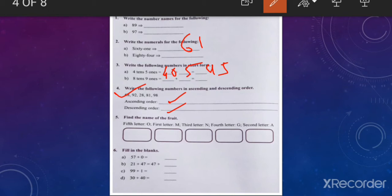Next, five. Find the name of the fruit. Fifth letter, fifth letter O. Children, here you can see boxes, one, two, three, four, five. Five boxes, okay? For five letters. Now you have to write the letters according to the order, okay? Like, fifth letter is O, so write O.